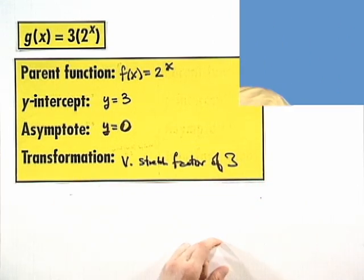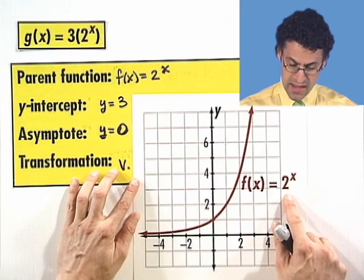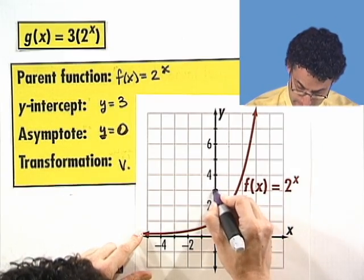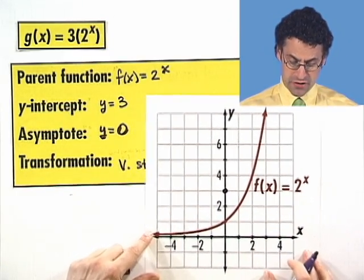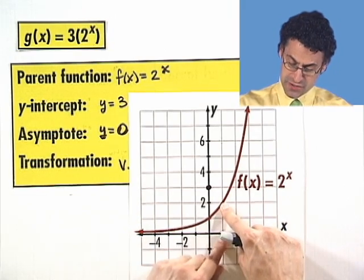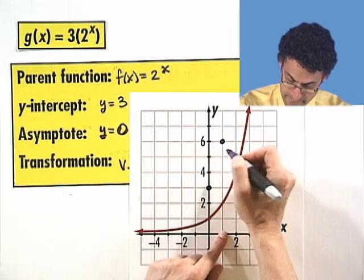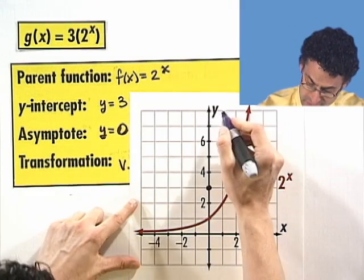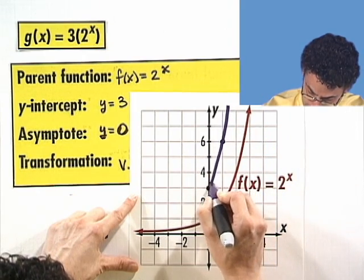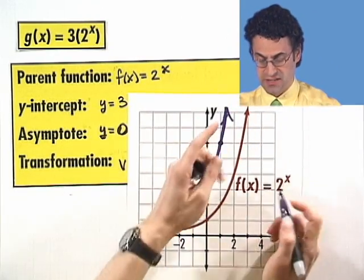And so what would the graph look like? Well, here I've graphed the parent function already. So this is 2 to the x. And so now if we put in the y-intercept, it's going to be at 3. We know this is going to be a vertical stretch by a factor of 3. So look at this point right here. This is the point 1 comma 2. So that point's going to be stretched vertically by a factor of 3, so that's going to go way up here to 6. The asymptote remains the same. And so we're just going to stretch this thing out. And then you can see how we're increasing and steepening up there.